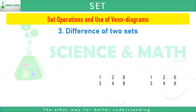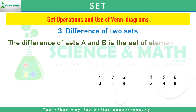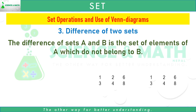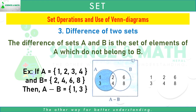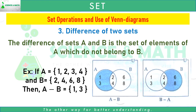Number three: difference of two sets. The difference of sets A and B is the set of elements of A which do not belong to B. For example, if A equals the set of 1, 2, 3, 4 and B equals the set of 2, 4, 6, 8, then A minus B equals {1, 3}. In the Venn diagram, the shaded region represents A minus B. Similarly, on the second diagram, the shaded region represents B minus A.